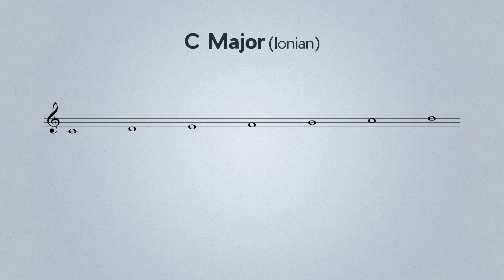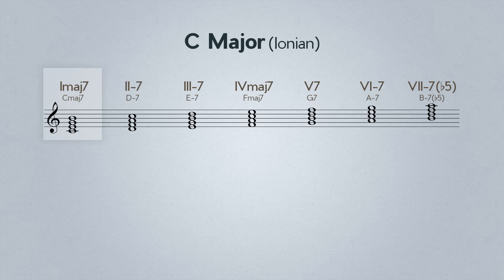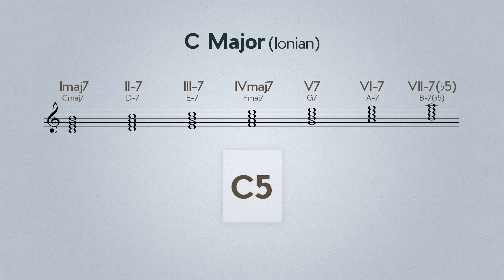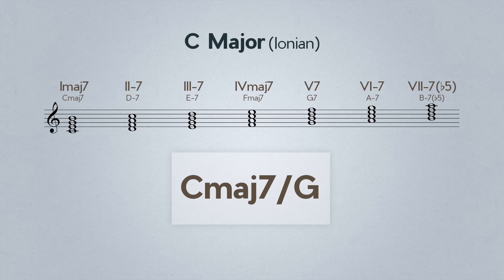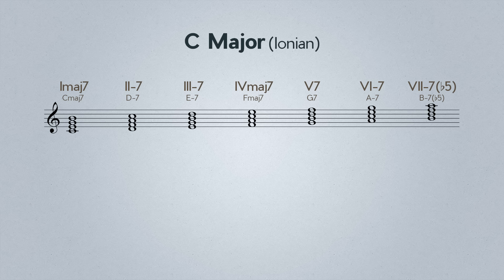Imagine we're writing a tune in, for instance, C major. We have seven diatonic chords, or chords in the key. And they can each come in many different forms like power chords, triads, seventh chords, extended structures, and various inversions. This already gives us a ton of diverse harmonic possibilities.